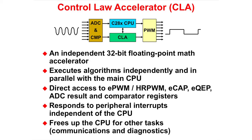The CLA is an independent 32-bit floating-point math accelerator. It executes algorithms independently and in parallel with the CPU. It has direct access to the EPWM, Hi-Res PWM, eCapture, EQEP, ADC result, and comparator registers. It responds to peripheral interrupts independently of the CPU and frees up the CPU for other tasks such as communications and diagnostics.